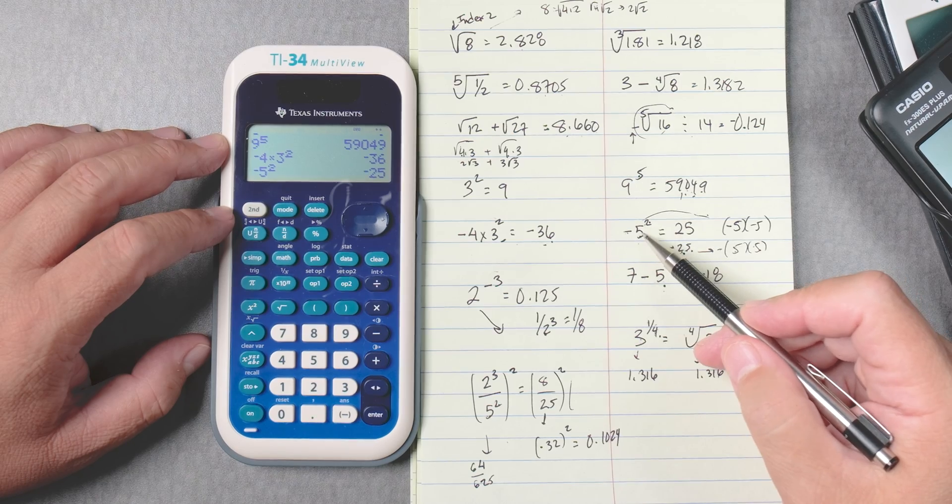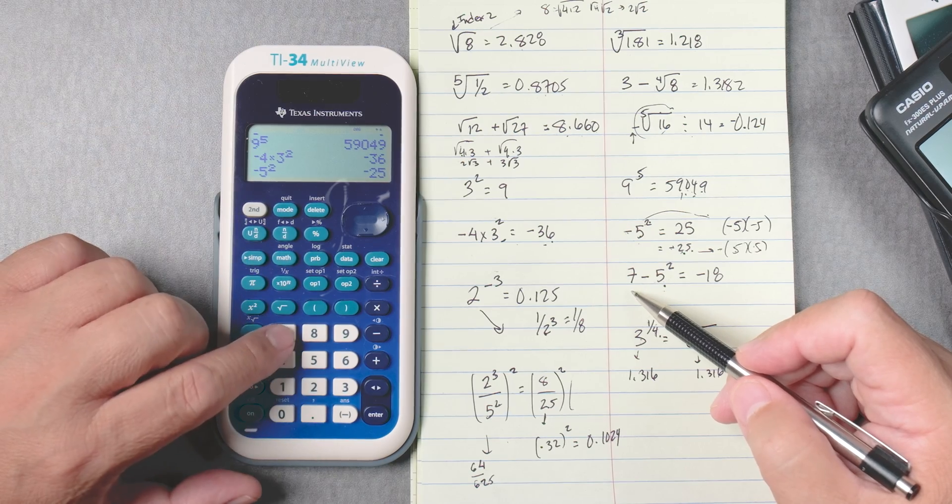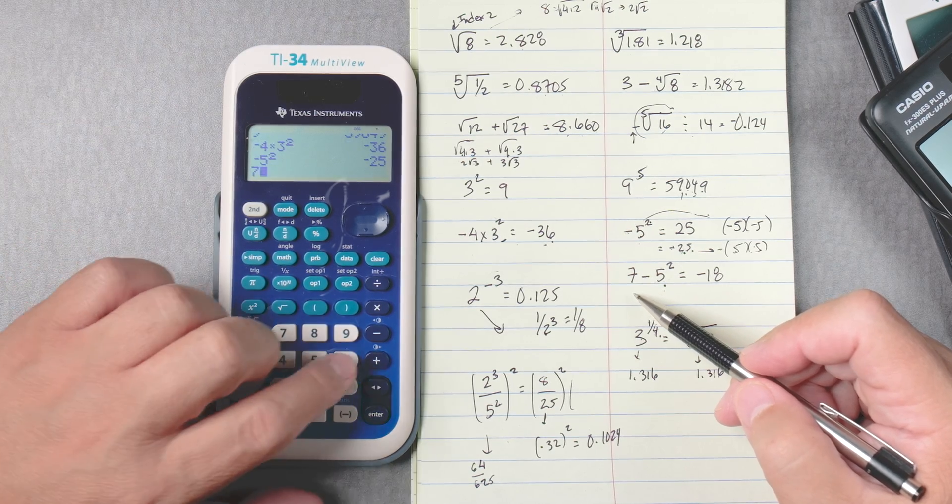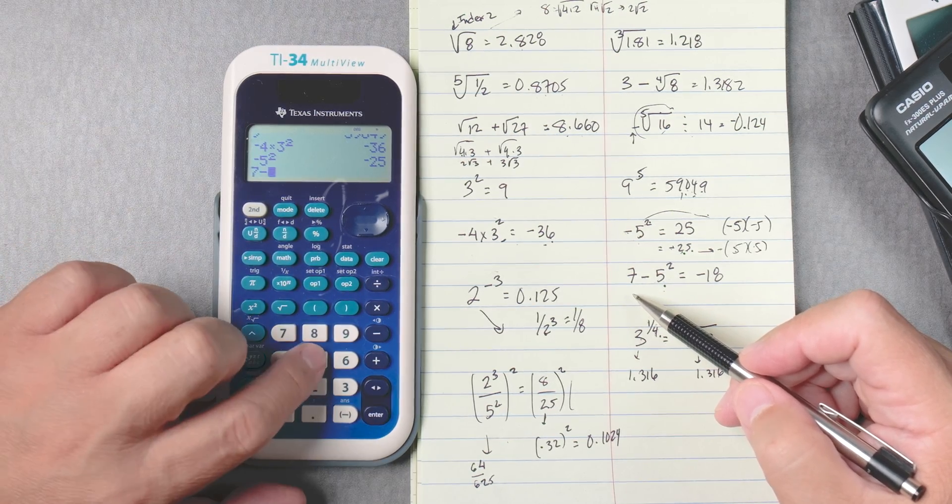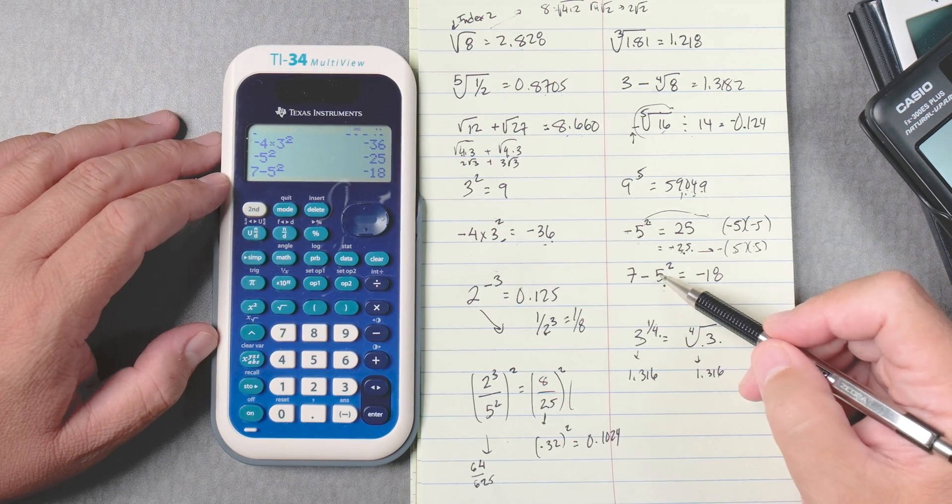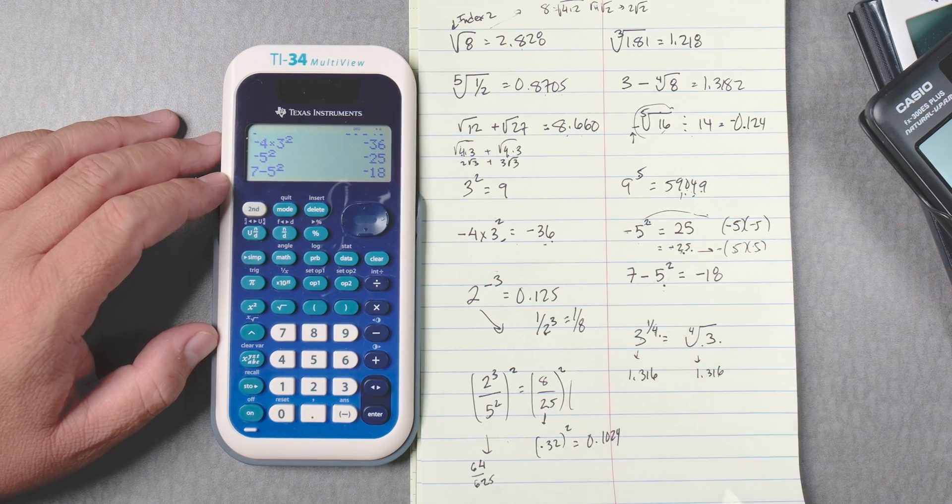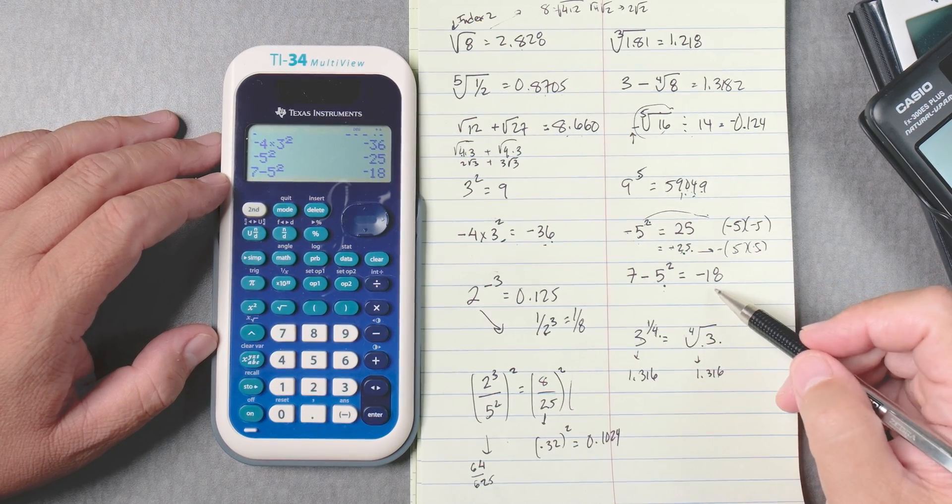So why is that important? Because here, the calculator, when you do 7 take away 5 squared and you enter, is going to do the order operation correctly. 5 squared, 25. 7 take away 25 is negative 18.